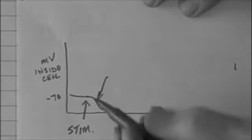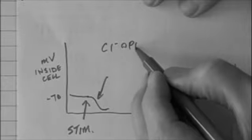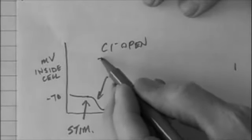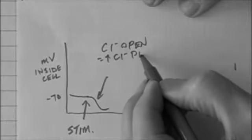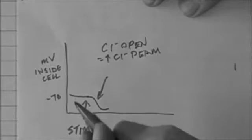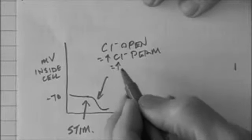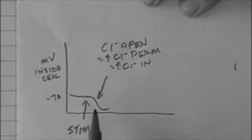It caused chloride channels to open, increasing the permeability to chloride. And when that happened, excess chloride moved into the cell.